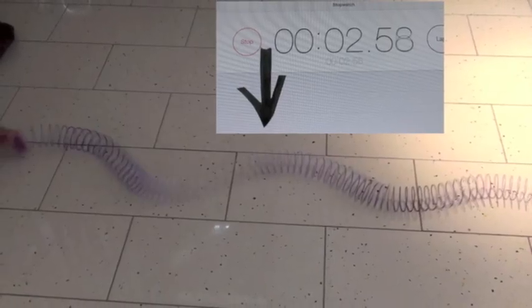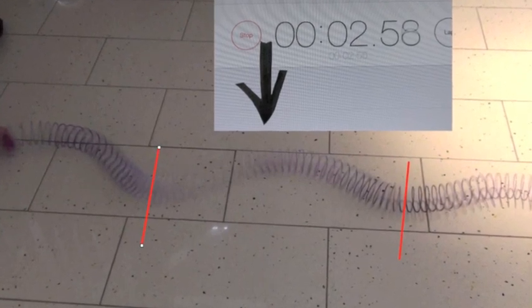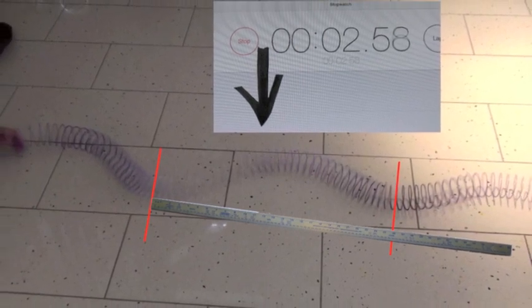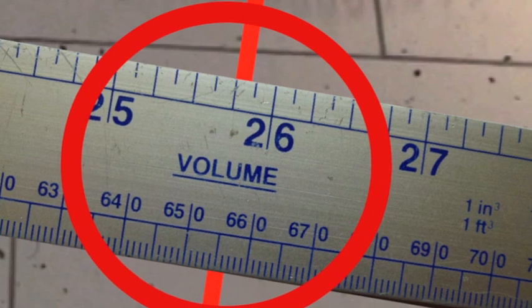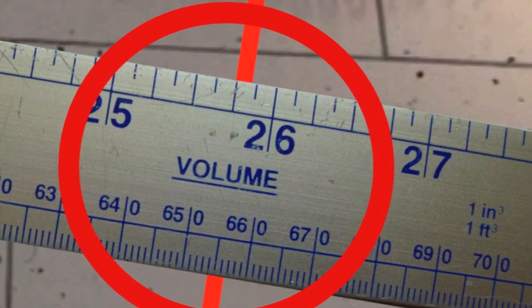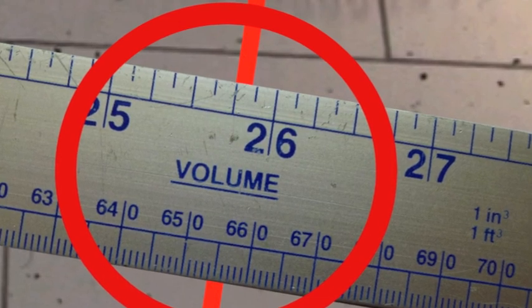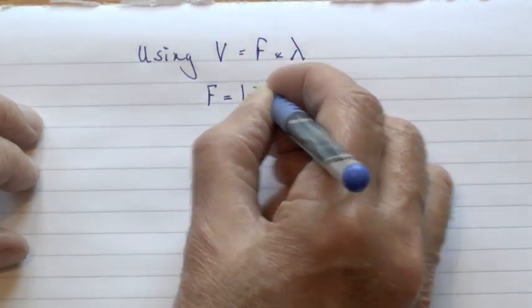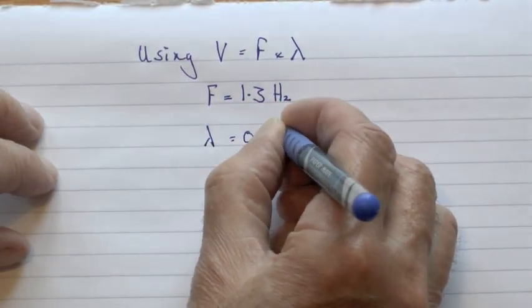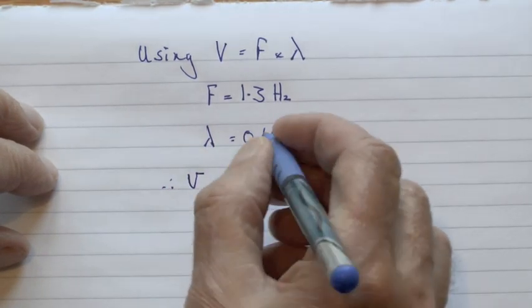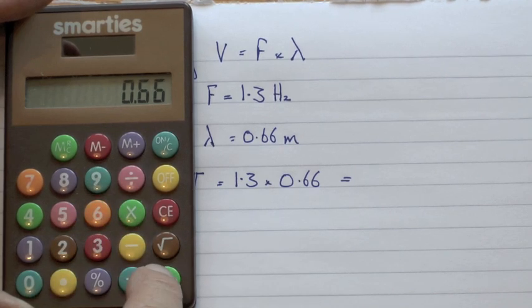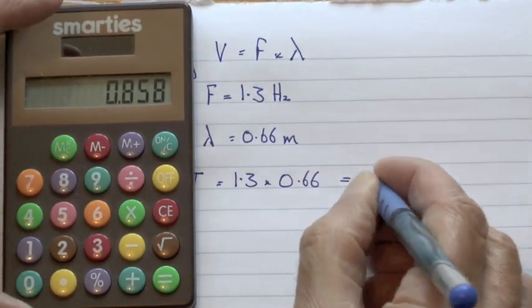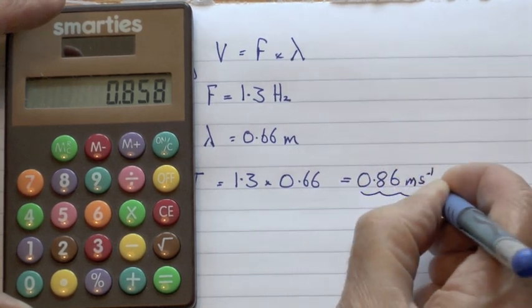To find the speed of the waves we were looking at, we can use the frequency we already found, and then add the measurement of the wavelength. Putting a ruler across the sides of the spring, we can measure the wavelength from trough to trough — that is 0.655 metres, though we'll settle on 0.66 metres. Using the equation velocity equals frequency times wavelength, with a frequency of 1.3 Hz and a wavelength of 0.66 metres: velocity = 1.3 × 0.66, which comes out at 0.858, or 0.86 metres per second to two significant figures.